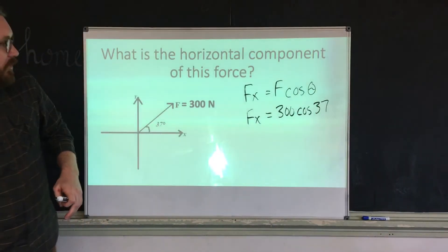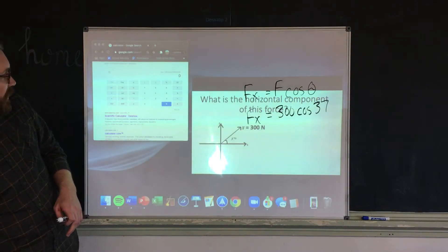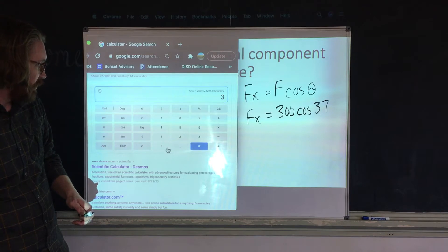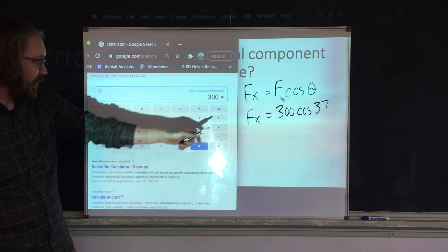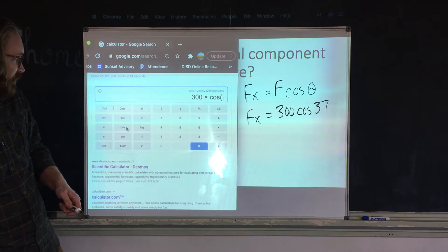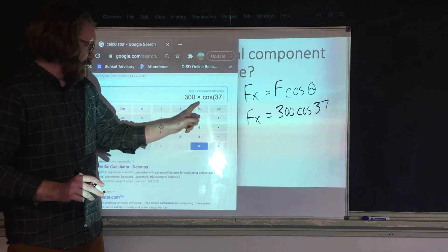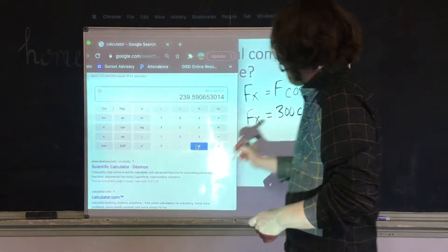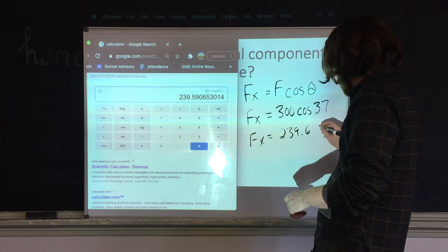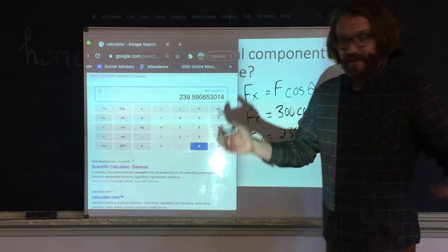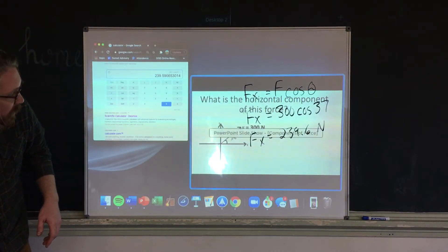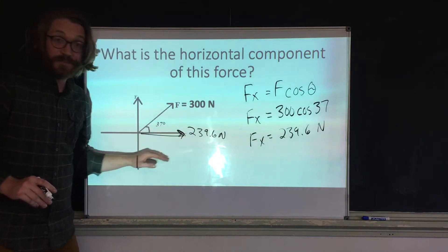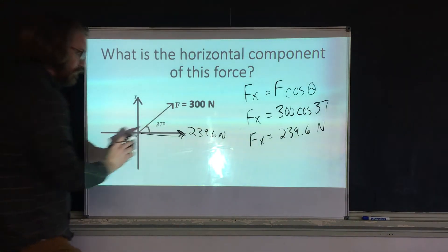Going to the calculator: 300 times cosine of 37. One thing to make sure — if you're using a calculator, check that it's set to degrees, not radians. 300 × cos(37°) = 239.59, which we round to Fx = 239.6 newtons. That's how much force is pulling it to the right — 239.6 newtons.